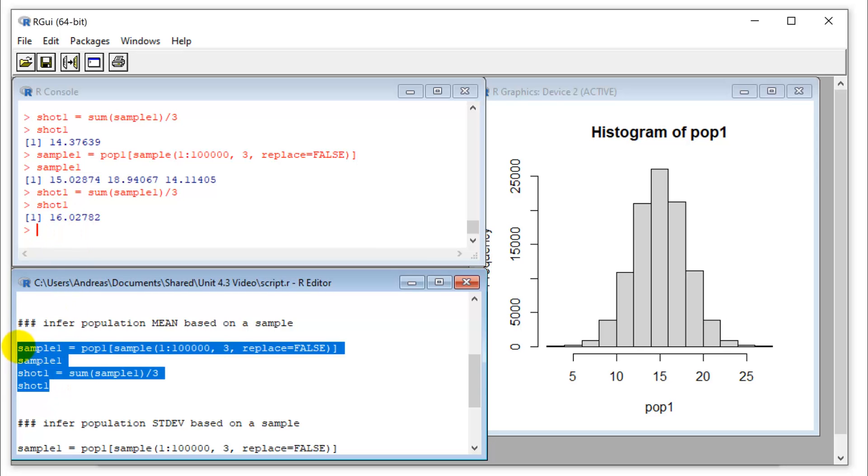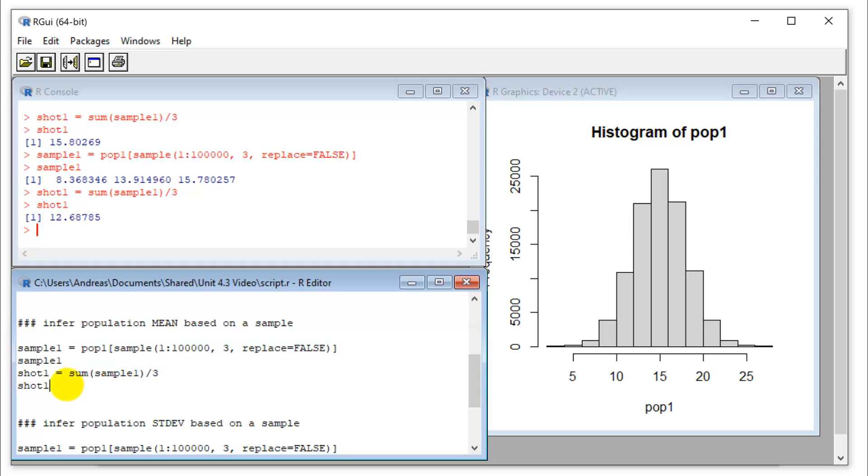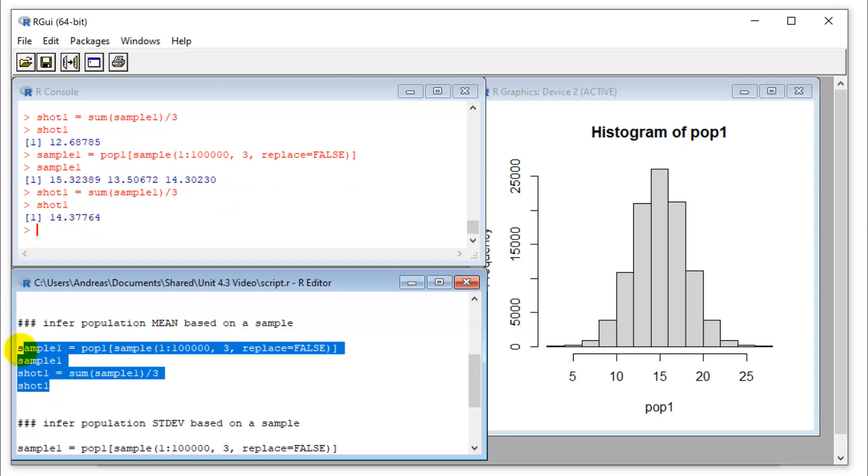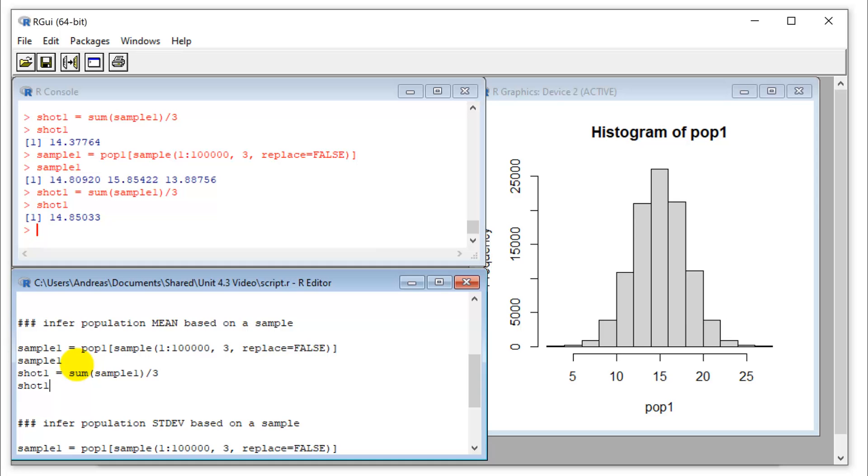Those are my three measurements on three random trees that I picked out of the big 100,000 population. And now I can calculate the mean. So I sum them up, divide them by three. And I'm calling this a shot, because that's my shot at estimating the mean of the population. So that shot may be a little bit off, but we can take a look. And yeah, we're a little too high. So we can do this again.